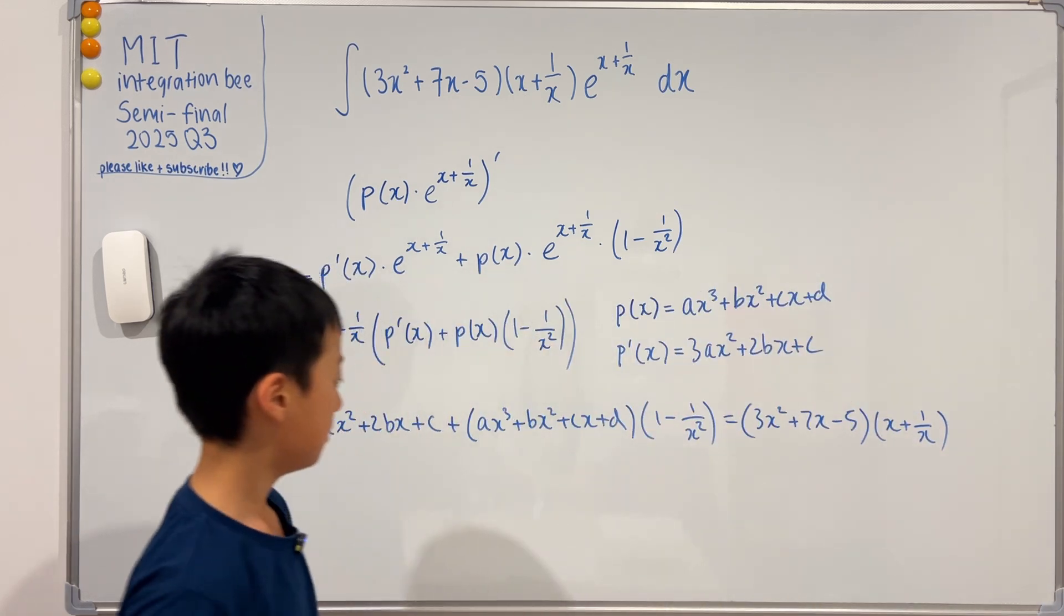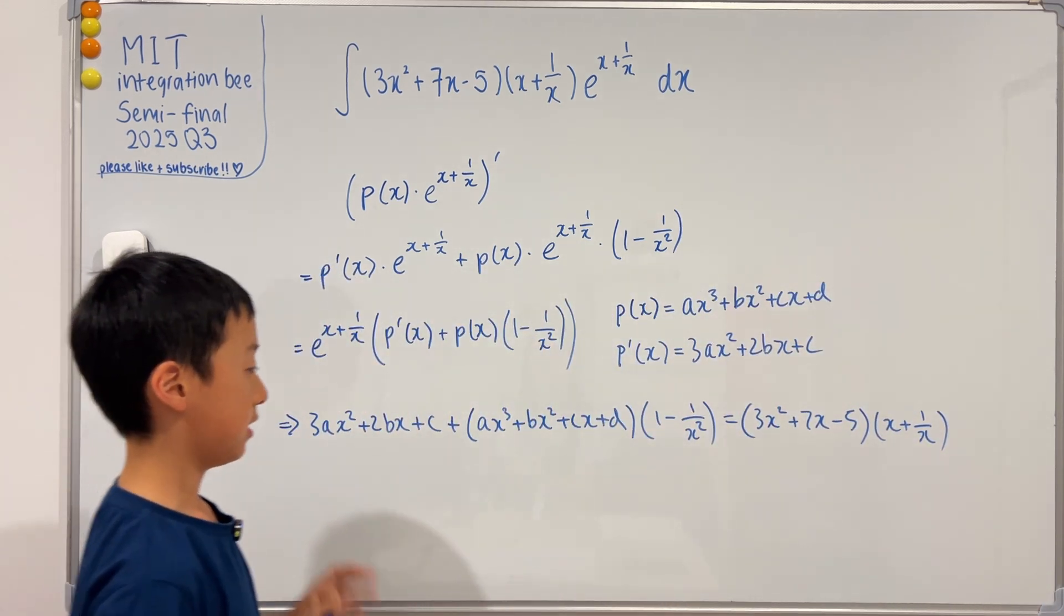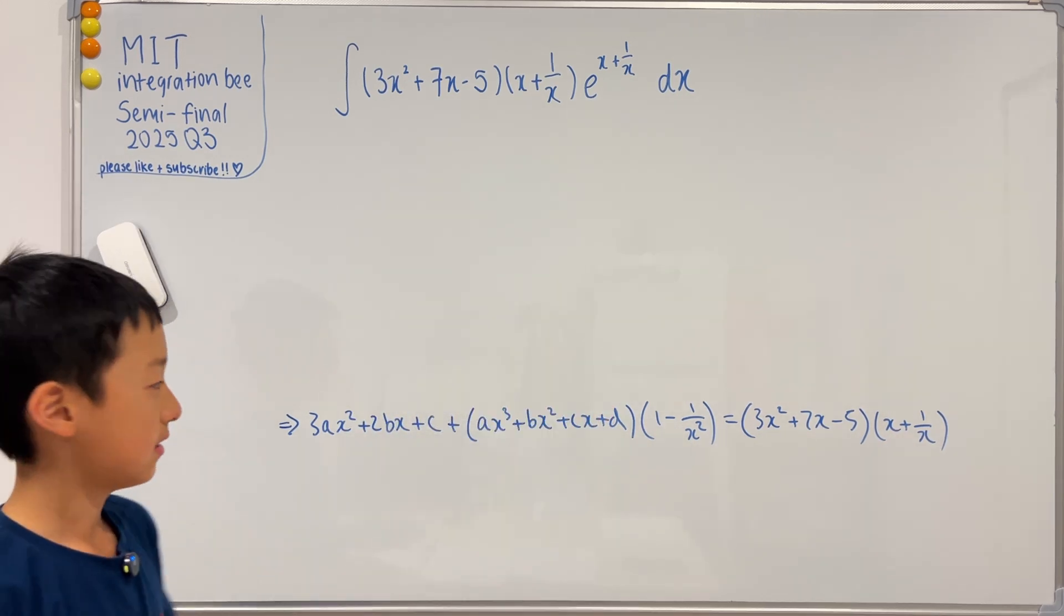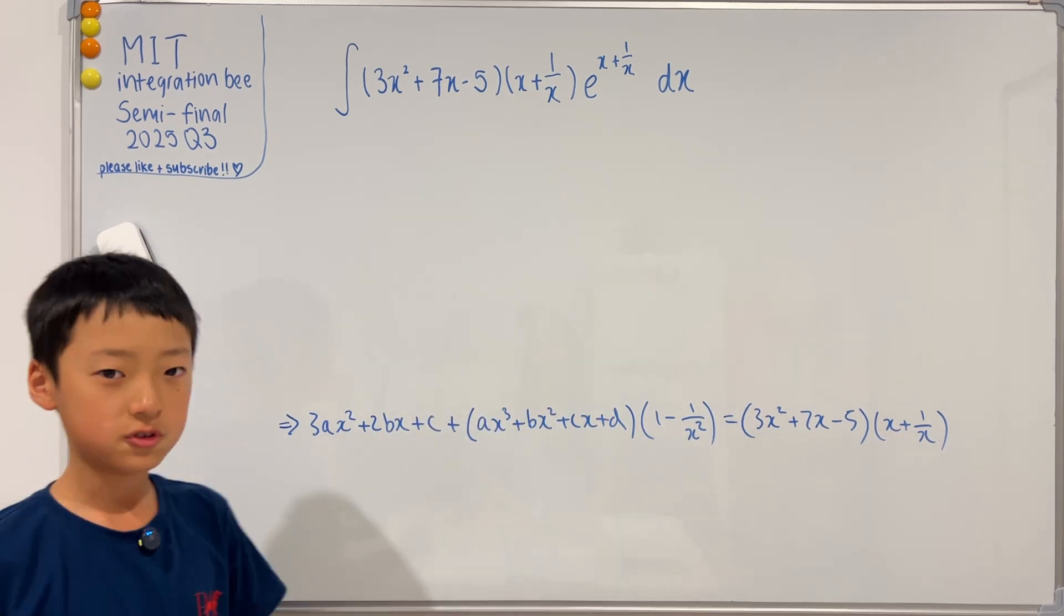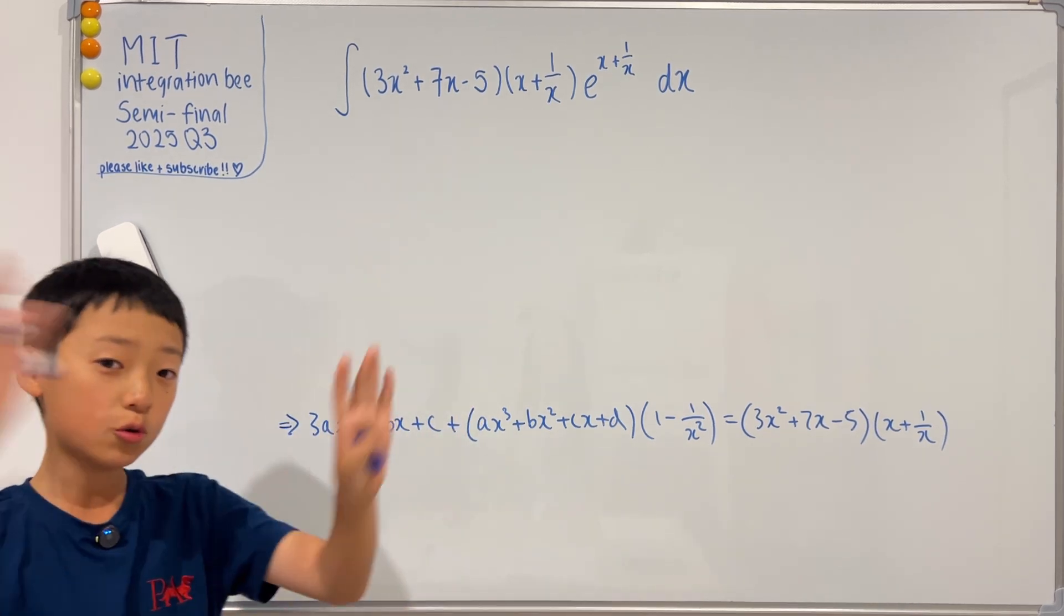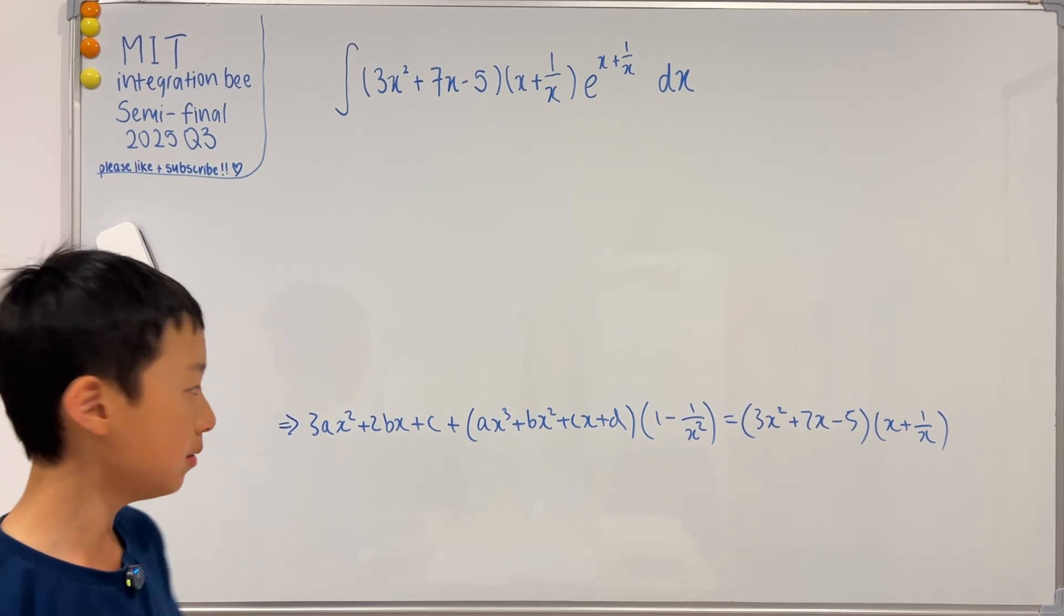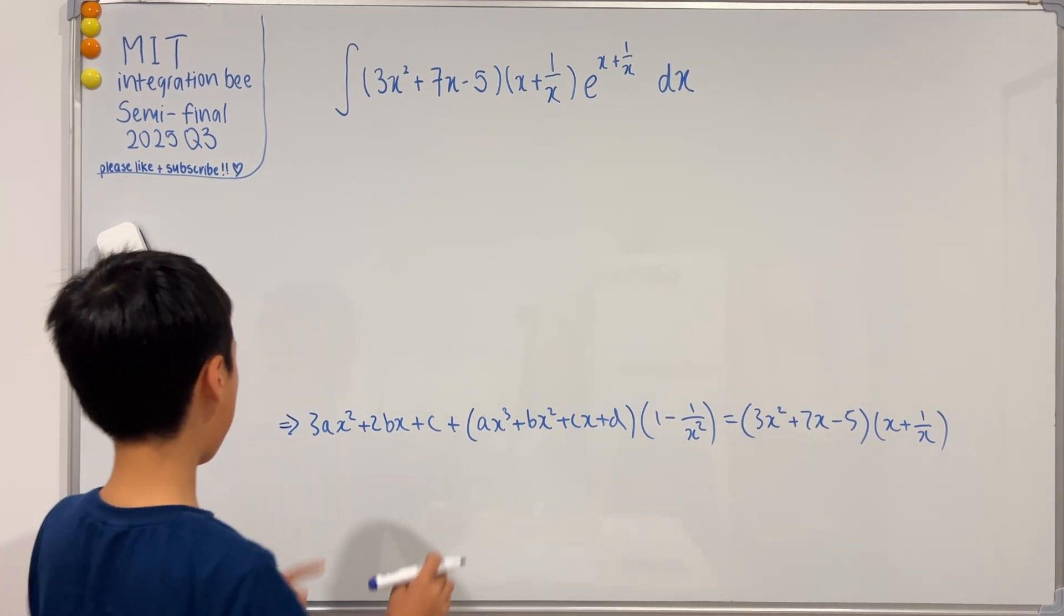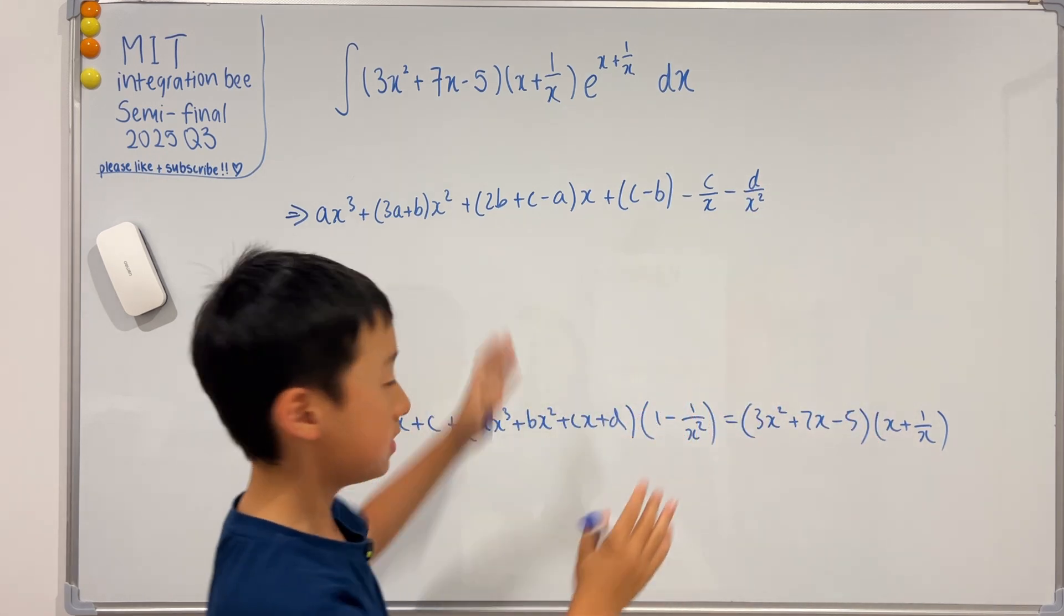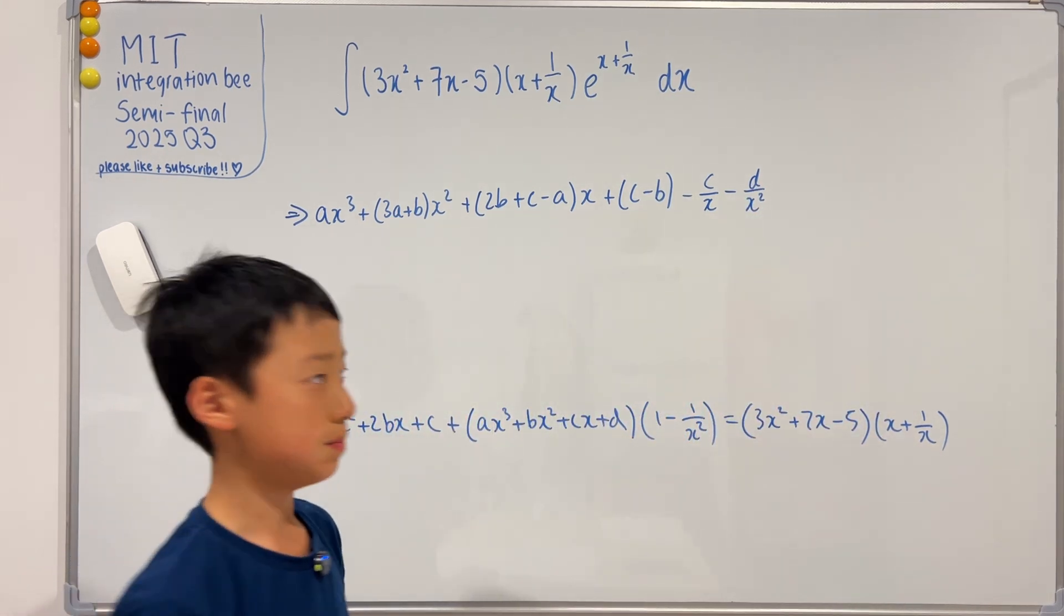Now I'm going to rub everything out and then we can just expand this bracket. If you do this on your own, you expand both sides and you collect all the like terms. Then you see that the left hand side will be this and the right hand side will be this.